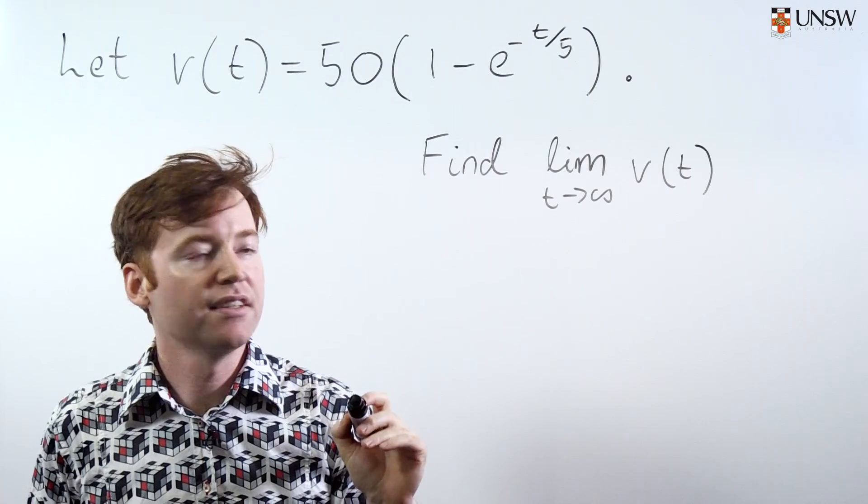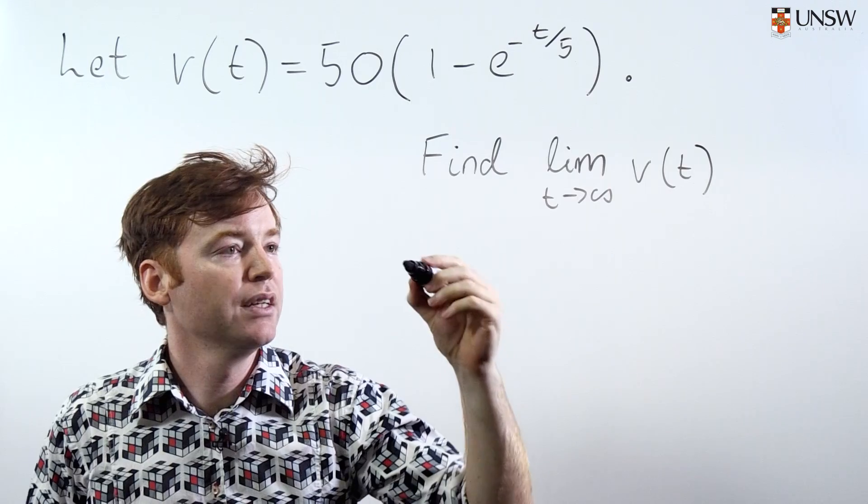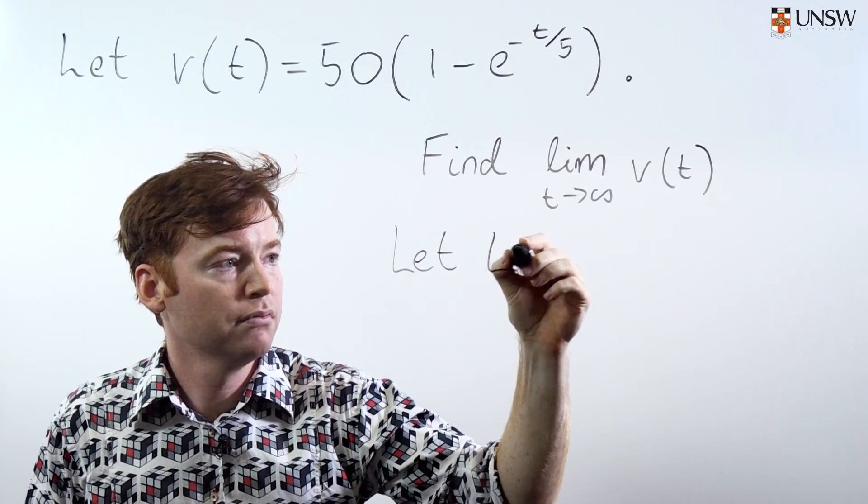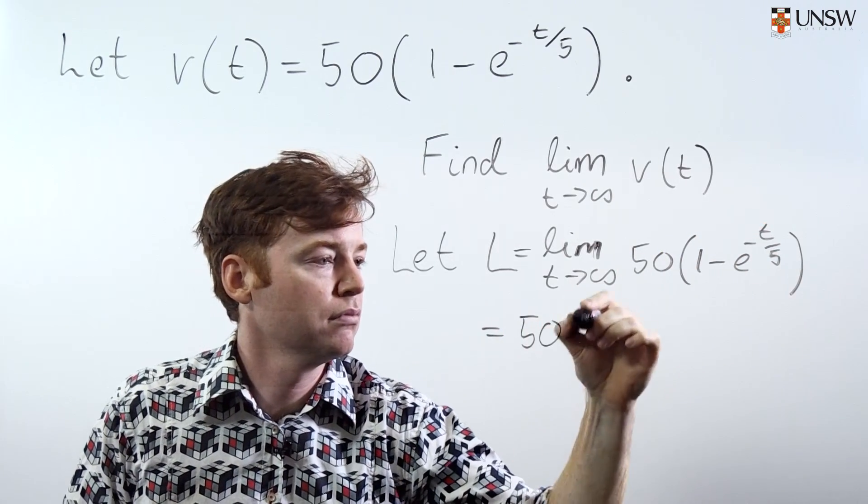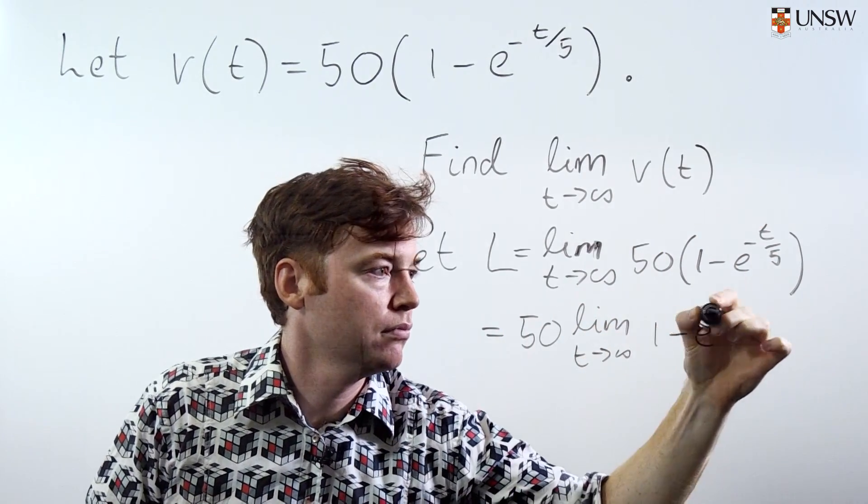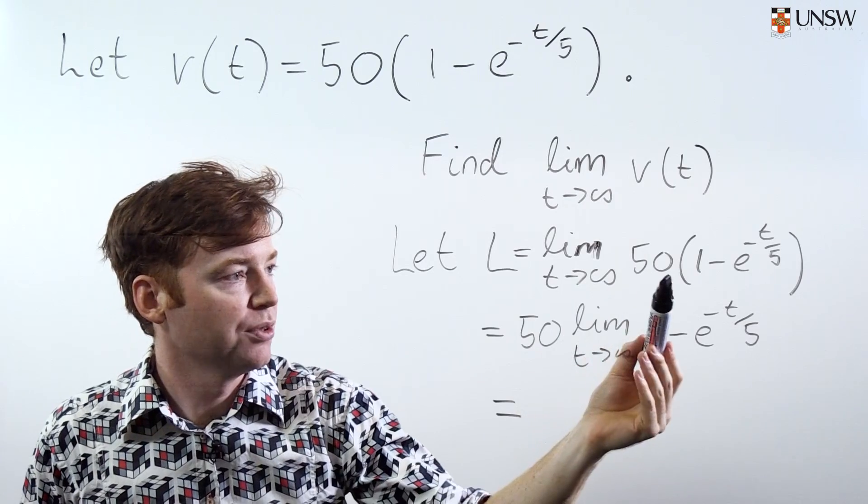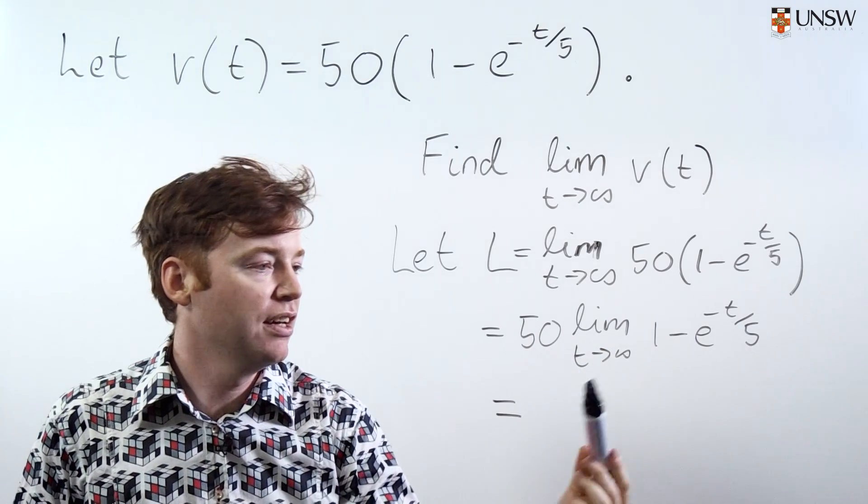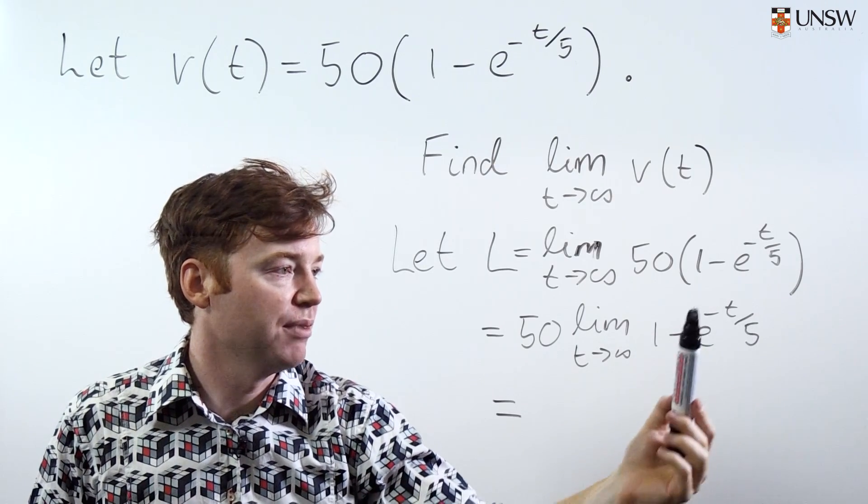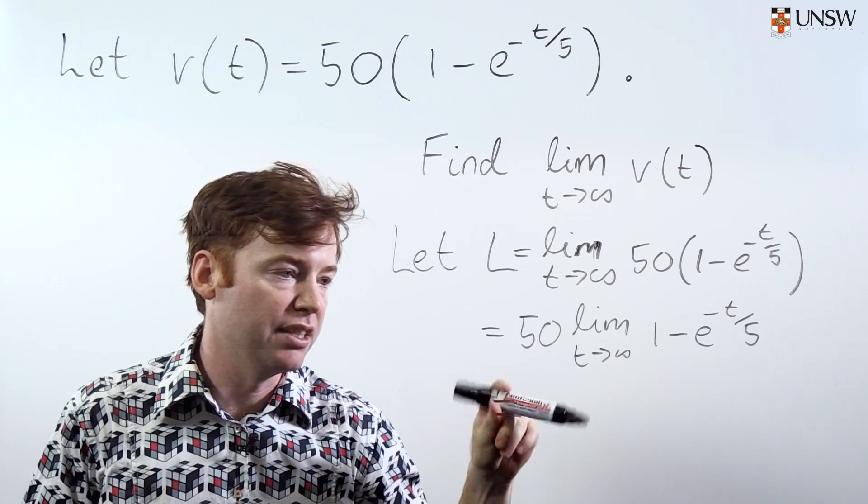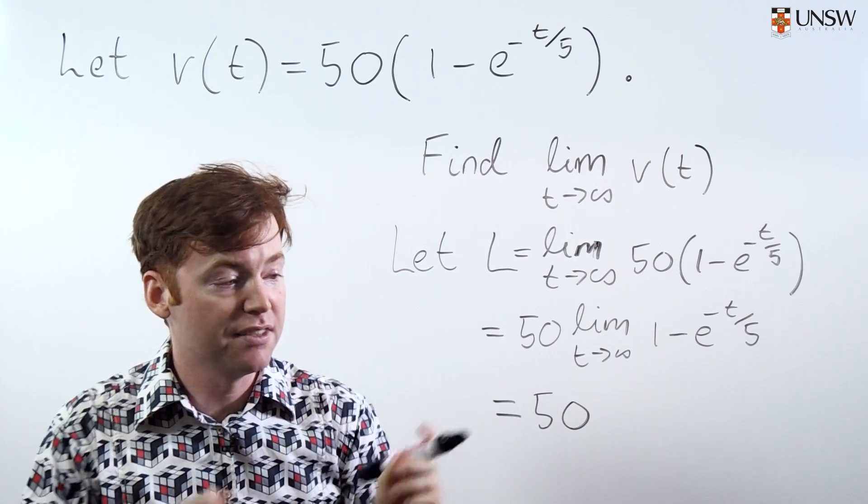We're going to find what we think this limit as t goes to infinity of v of t should be. We're going to call it L. So to compute this limit, I took the constant factor out the front and I'm left with the limit as t goes to infinity of this, but this is just one minus something that's getting really, really small. So the limit is just 50. At least this is what we think.